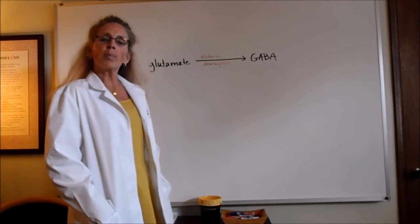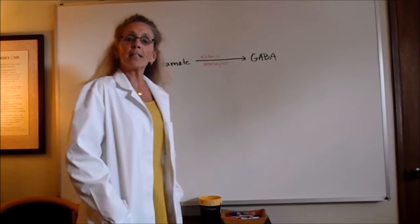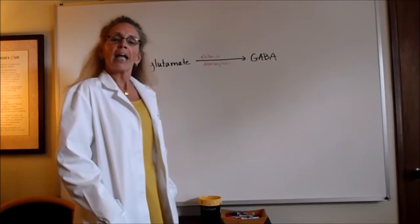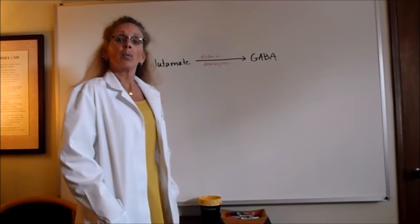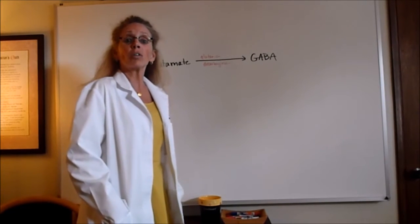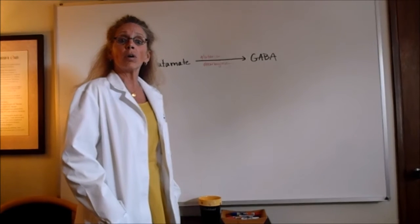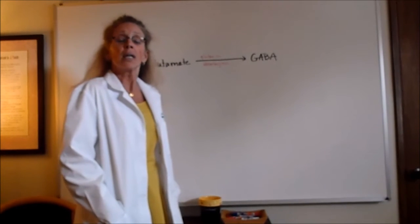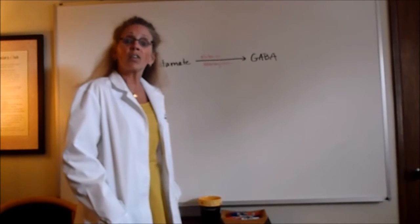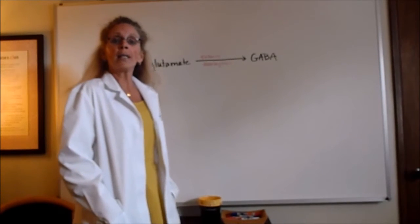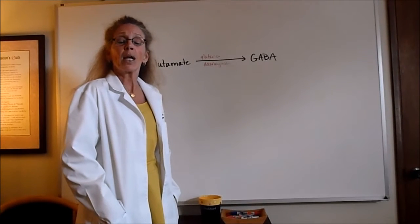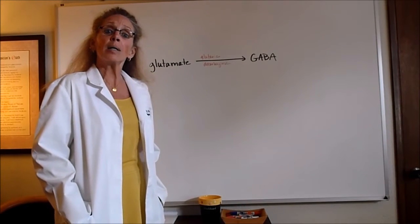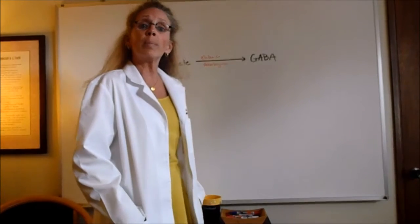One is known as glutamate and one is known as GABA. Let's start with glutamate. Glutamate is an excitatory neurotransmitter and tends to rev up the brain.